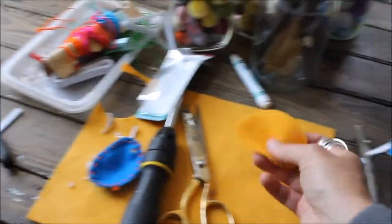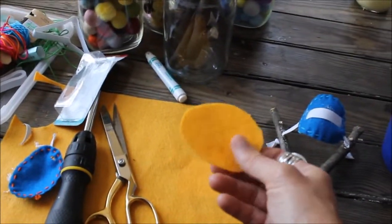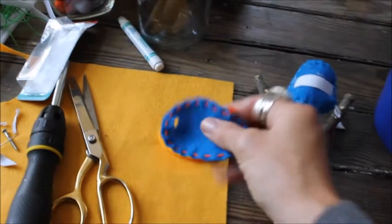Next step, felt. Just cutting an archaic oval. Do a simple stitch.